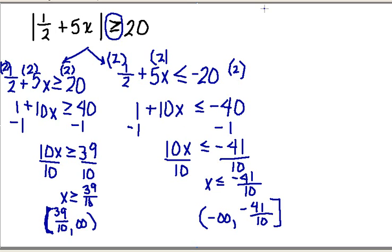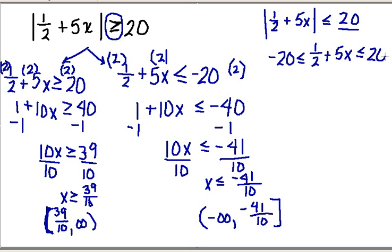Had the inequality been the other way - if the original problem was |1/2 + 5x| ≤ 20 - I would set this up as a compound inequality. Take the number, switch the sign, and make that the left side: -20 ≤ 1/2 + 5x ≤ 20. So if the inequality were reversed (the small end towards the absolute value), I would set this up as a compound inequality and solve it instead of two separate problems.